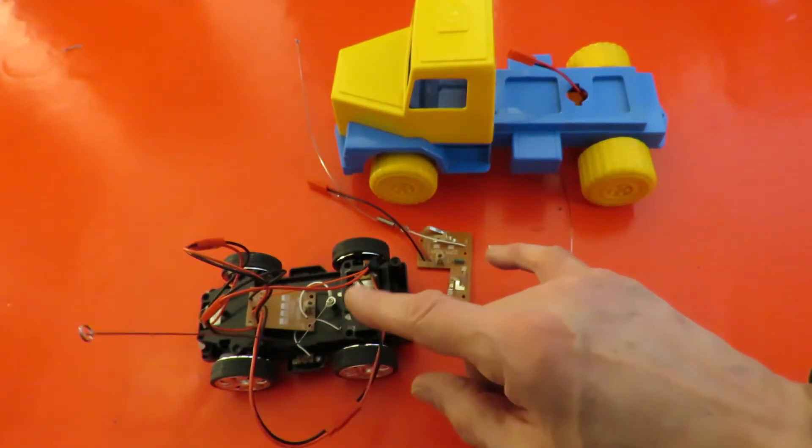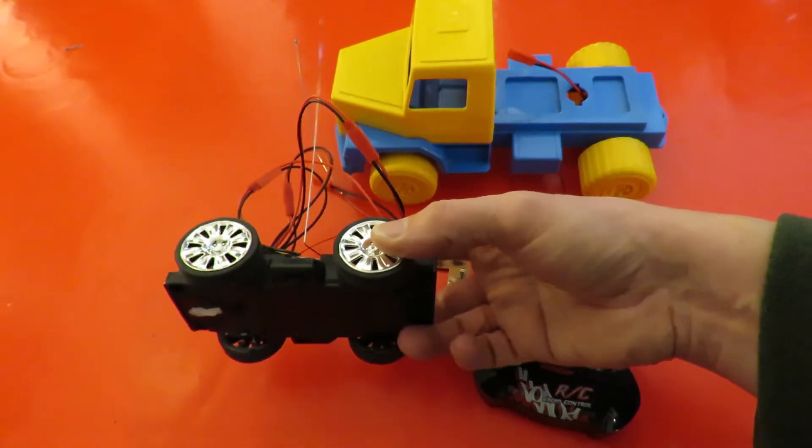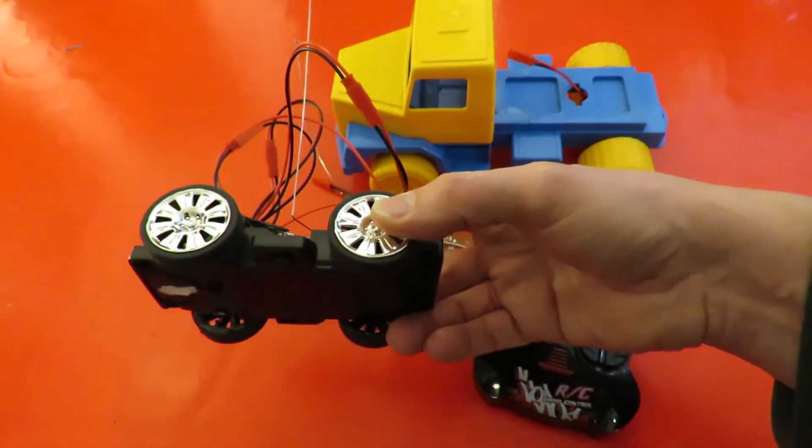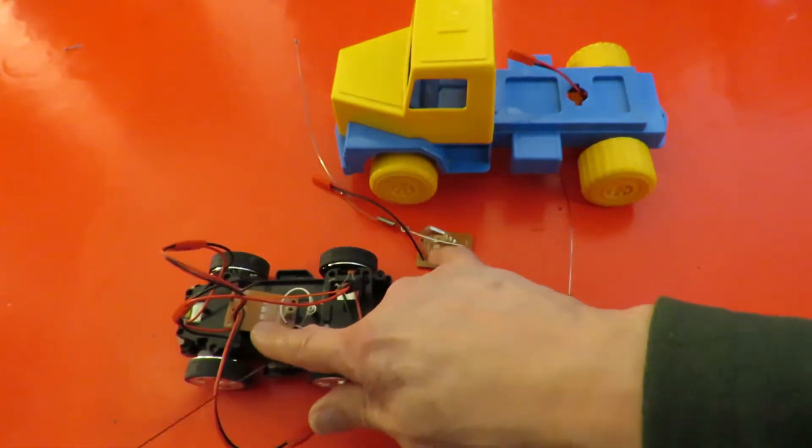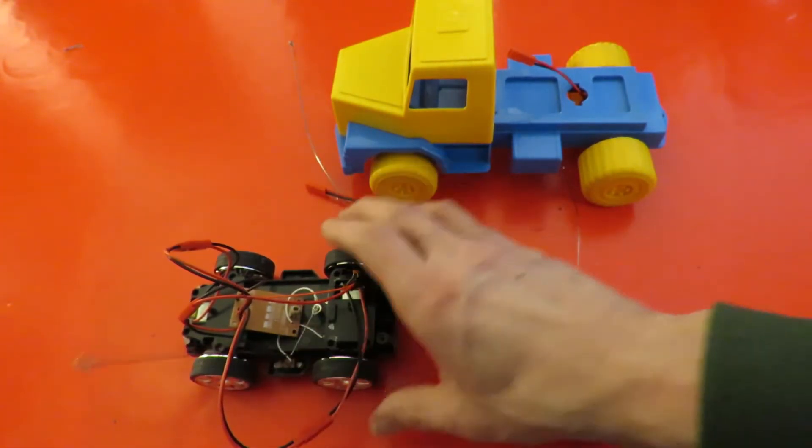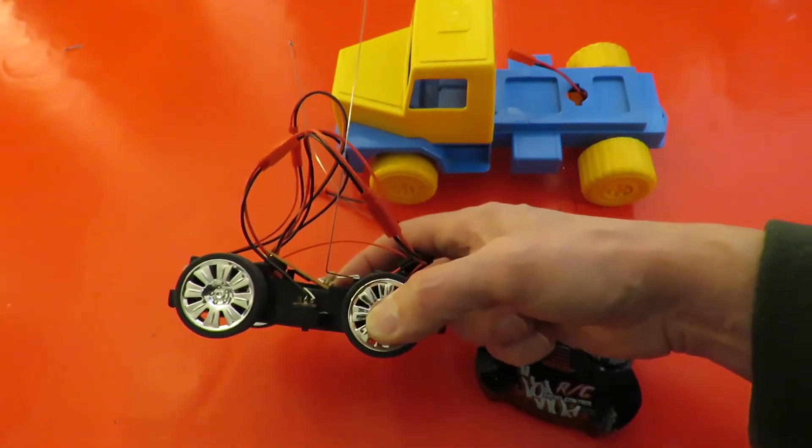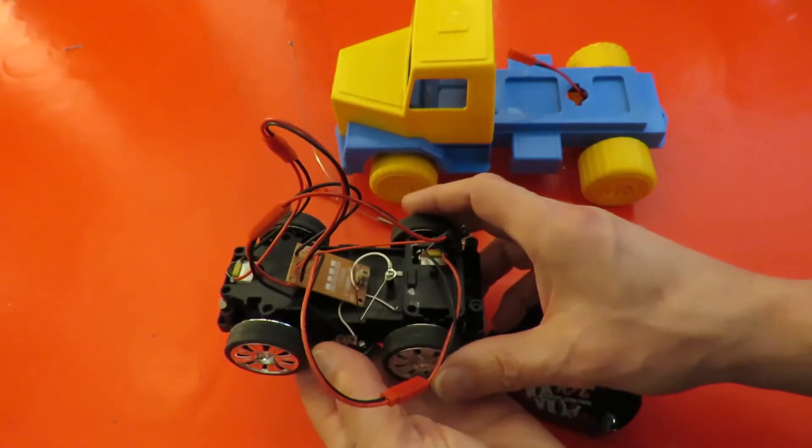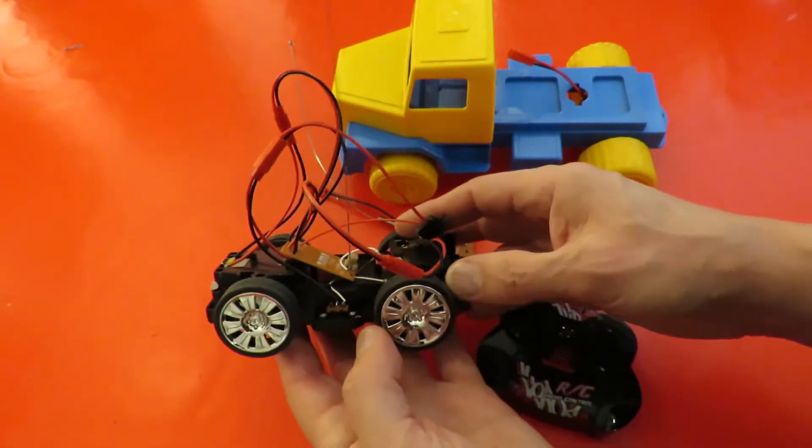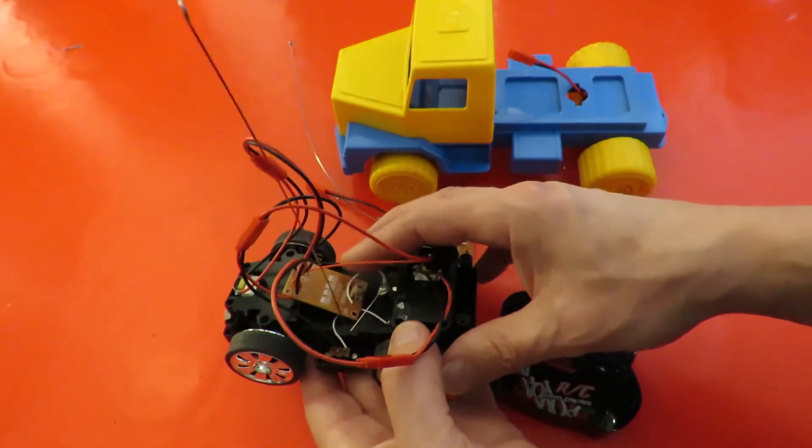I was going through my junk pile for a different project and found this little car chassis. It's a good example of why I bought these. This little car I've robbed the receiver from it to use in a different project. So we've got all the running gear from a nice little radio controlled car but no receiver because I've already pinched it.